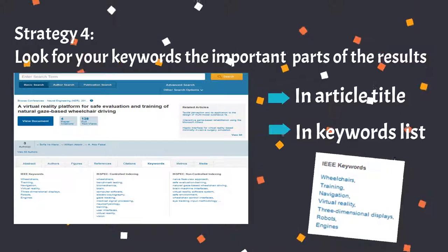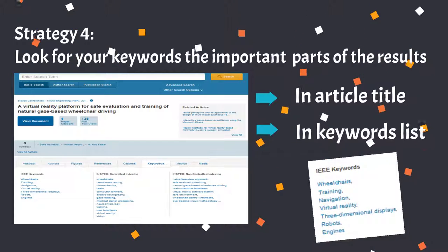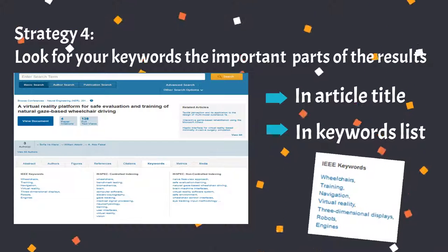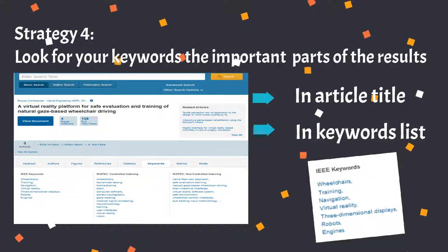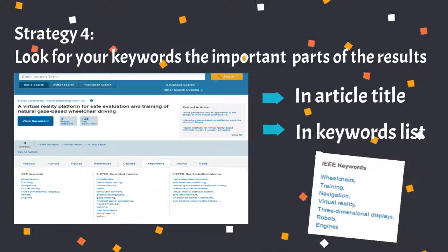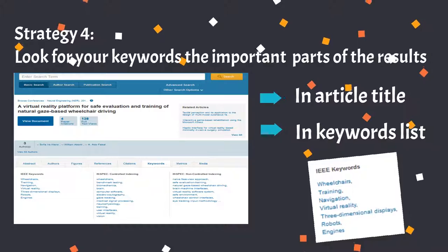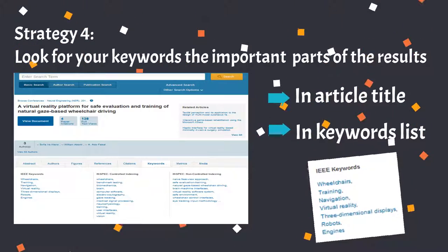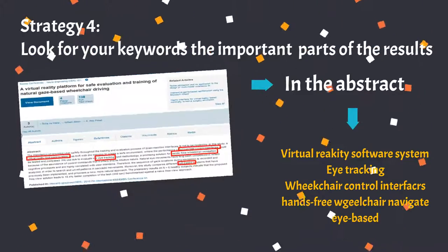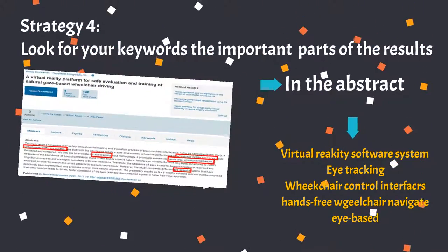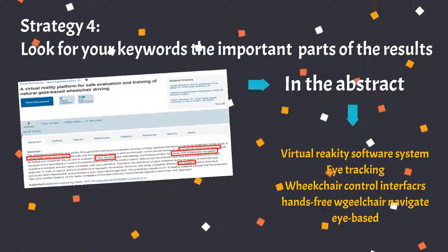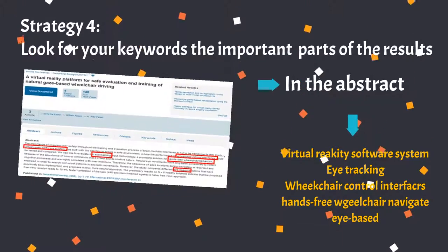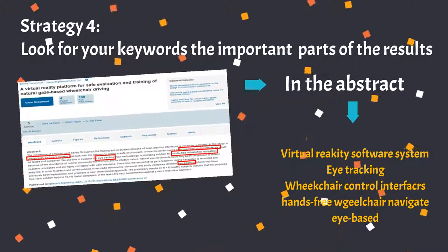Look for your keywords in the important parts of the results. You can find the keywords in the article title, in the keywords list, and also in the abstract or first paragraph.